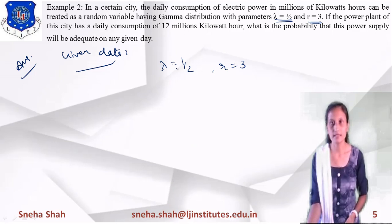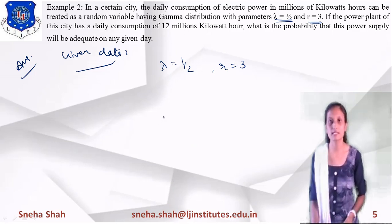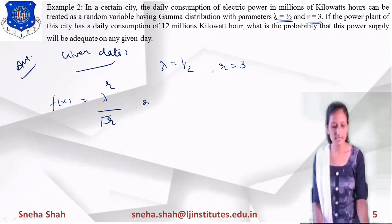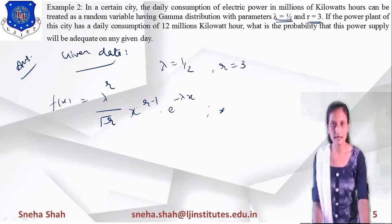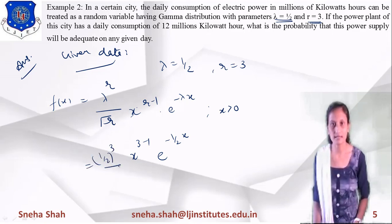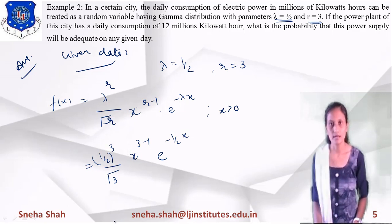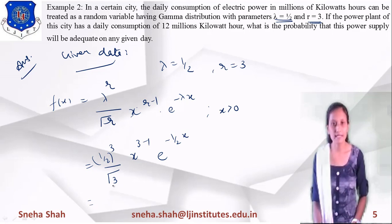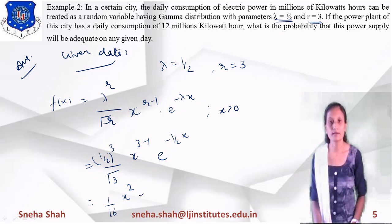We substitute these values into the gamma distribution equation. f(x) = λ^r / Γ(r) · x^(r−1) · e^(−λx), for x > 0. With r = 3 and λ = 1/2: f(x) = (1/2)^3 / Γ(3) · x^(3−1) · e^(−x/2). Since Γ(3) = 2, we get (1/8) / 2 = 1/16. So f(x) = (1/16) · x² · e^(−x/2).